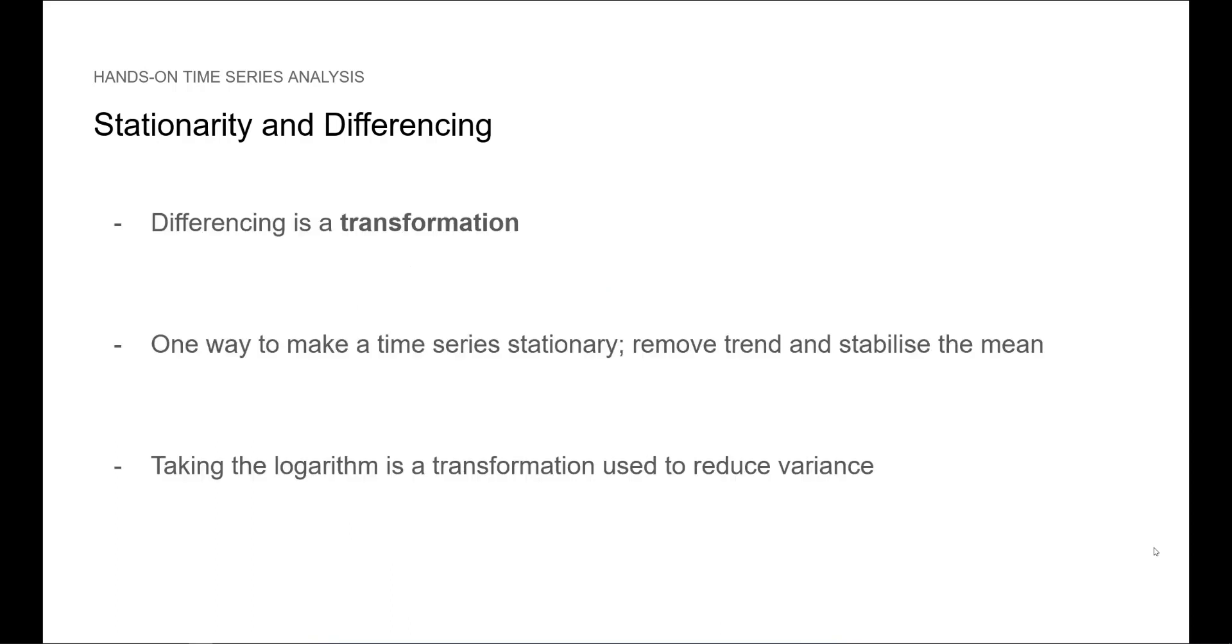Now differencing is what is called a transformation. It is a way to make a time series stationary by removing trend and stabilizing the mean. Taking the logarithm is another popular transformation used to reduce variance.